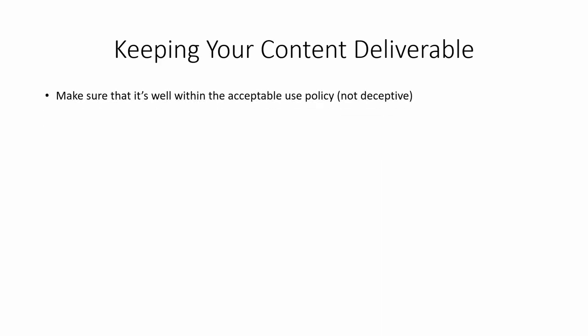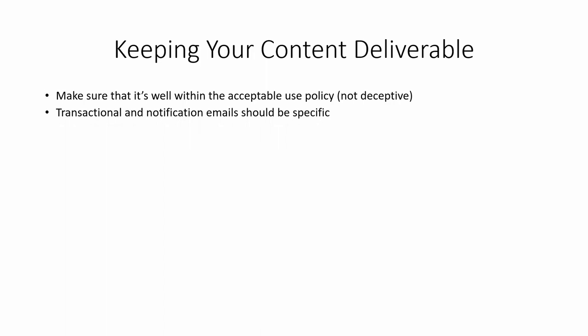Part of the process in working with Amazon SES is making sure that your content is such that your emails will be deliverable and you'll be avoiding hard bounces. You want to make sure everything you're writing and putting in your email is well within the acceptable use policy. Amazon is really looking for confirmation that you're not trying to deceive anyone, that your email is delivering exactly what it says it's going to. Transactional or notification emails should be specific — they should comply to whatever the recipient bought or opted into.